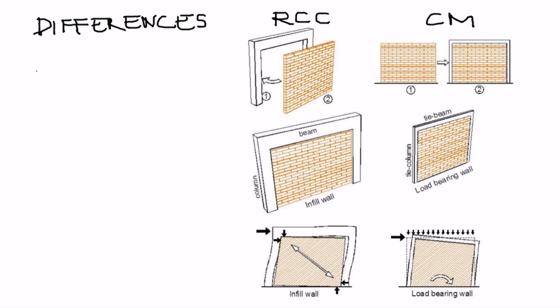First difference is related to construction sequence. In the case of RCC frame construction, RCC frame is constructed first and masonry walls are constructed next. Whereas in confined masonry construction, walls are constructed first, followed by concrete confining elements.